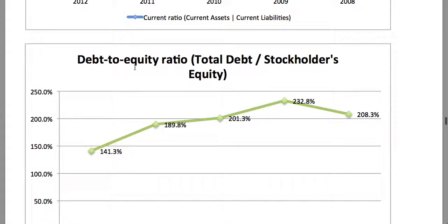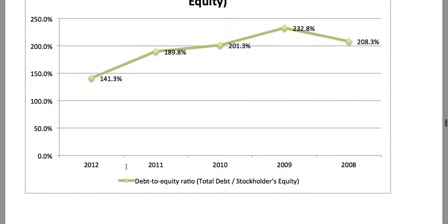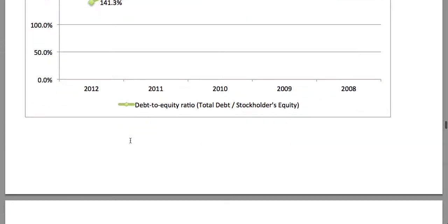Looking at the debt to equity ratio — total debt in relation to stockholders' equity — we see that it was at a high point of 232 percent debt to equity and it has improved since to 141.3 percent. This is fairly in line with my hypothesis that companies are preparing for short-term uncertainty; one would expect them to reduce debt, and this appears apparent in these calculations.